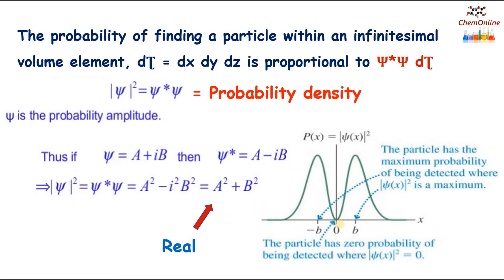represents the probability of finding a particle within a small volume of space. Such an interpretation was given by Max Born, and hence it is also known as Born's interpretation of the wave function.